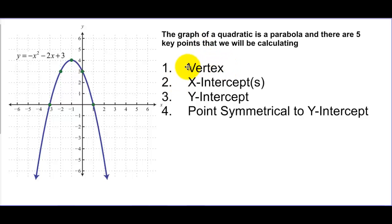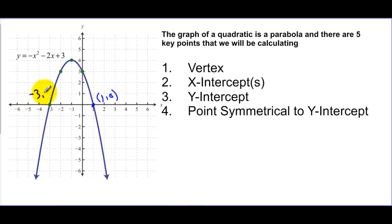We're going to find the vertex of the graph — we're going to learn how to calculate that and graph it. We're going to calculate the x-intercepts. Looking at the graph, this particular graph crosses the x-axis at two spots: it crosses at (1, 0) and at (-3, 0), and those points are the x-intercepts. I also want to find the y-intercept — you can see the point (0, 3) — and something called the point symmetrical to the y-intercept.